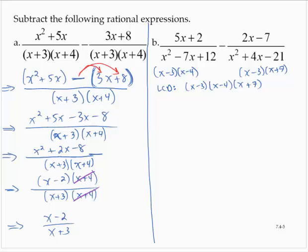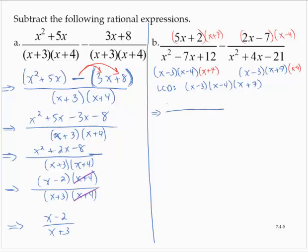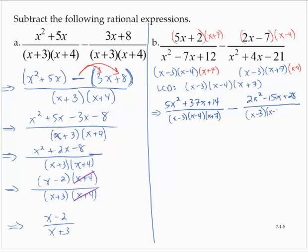We build in x plus 7 in the numerator and denominator of the first fraction. The second fraction is missing the x minus 4, so we build it in in the denominator and numerator. This gives us 5x squared plus 35x plus 2x plus 37x plus 14 over the common denominator, minus 2x squared minus 8x minus 7x, that's minus 15x plus 28.